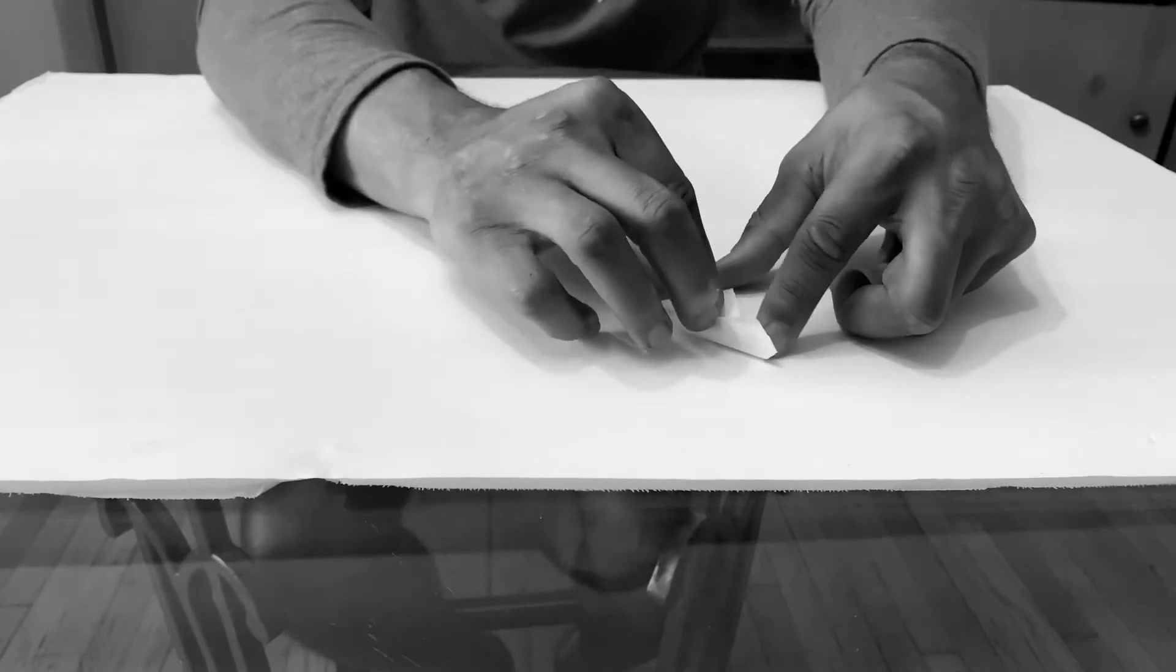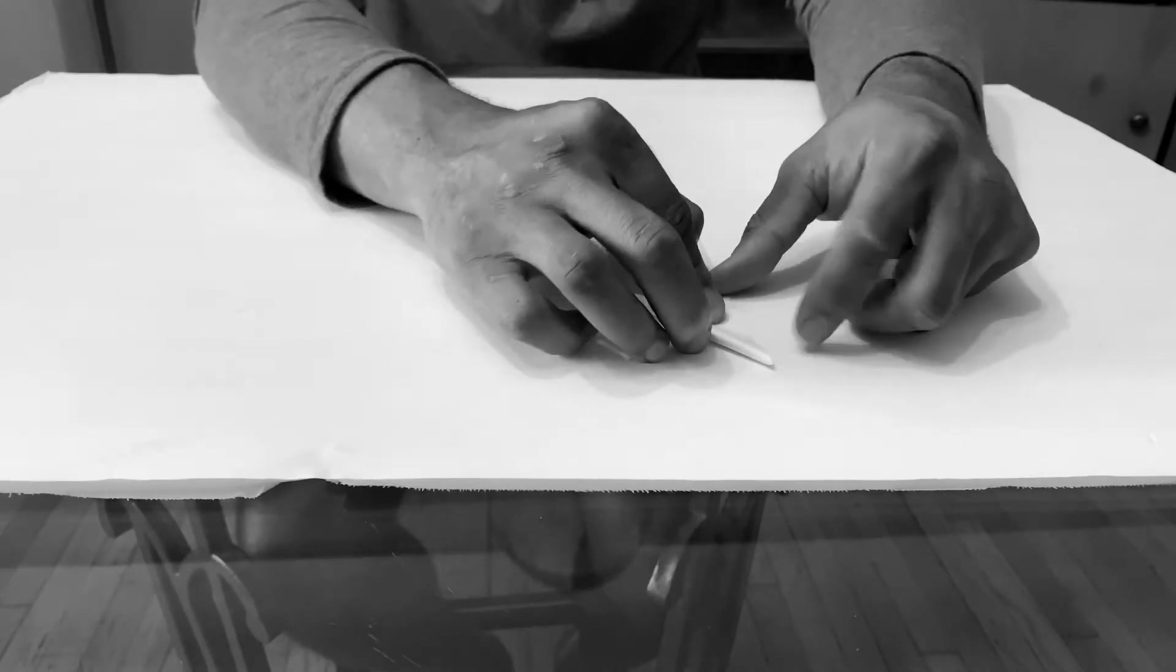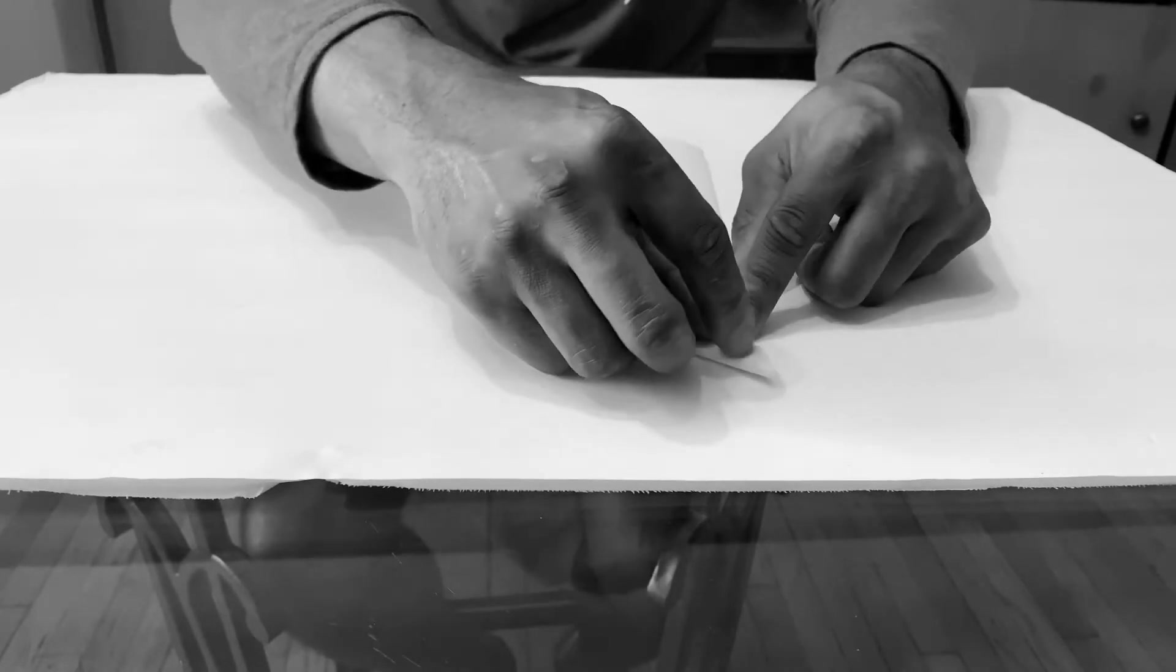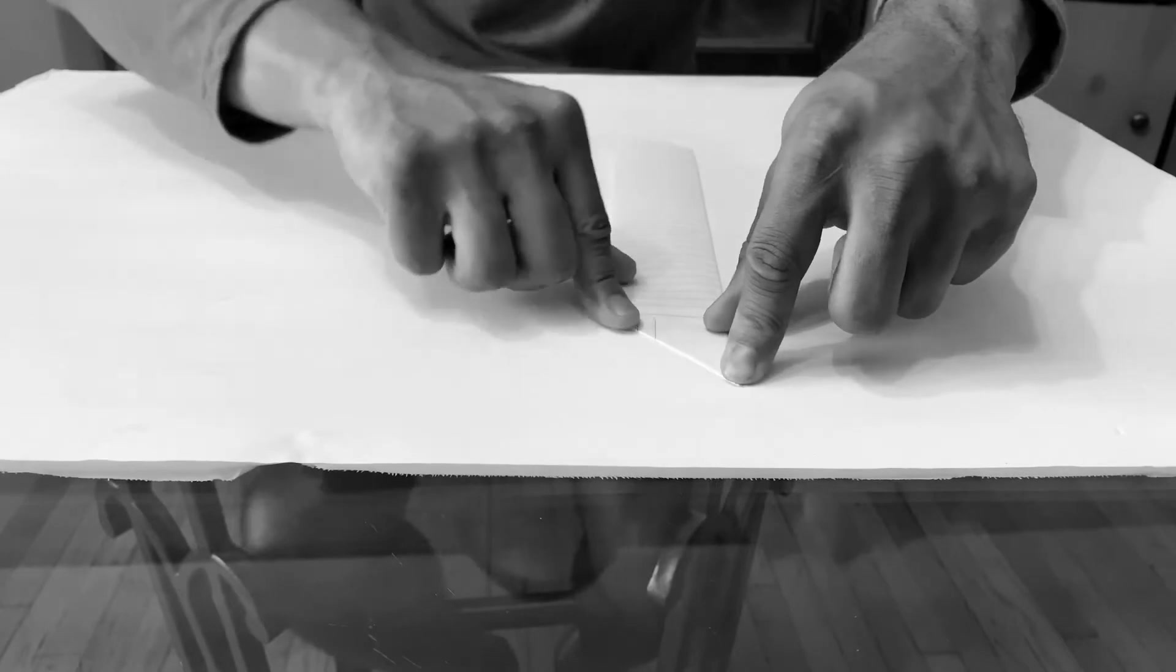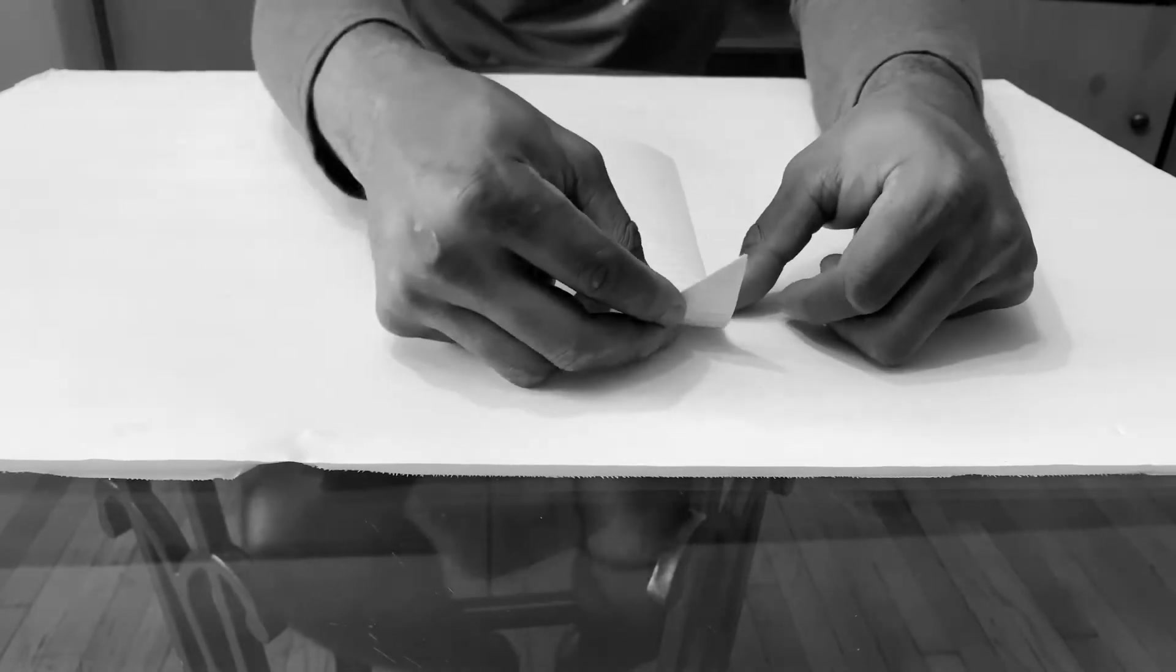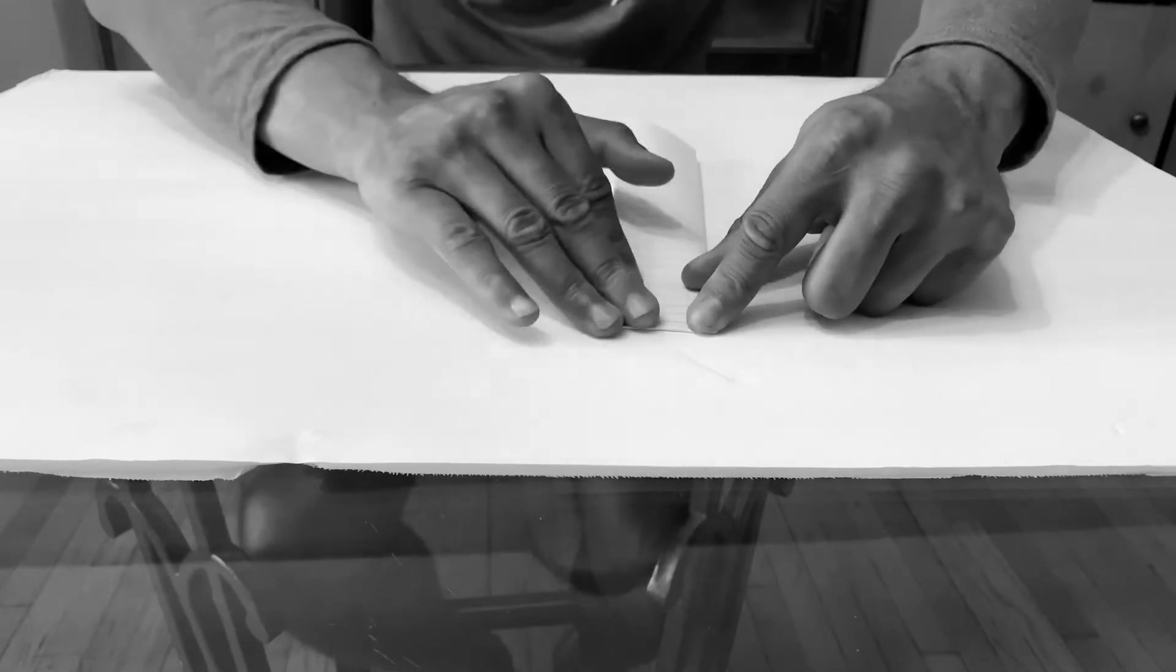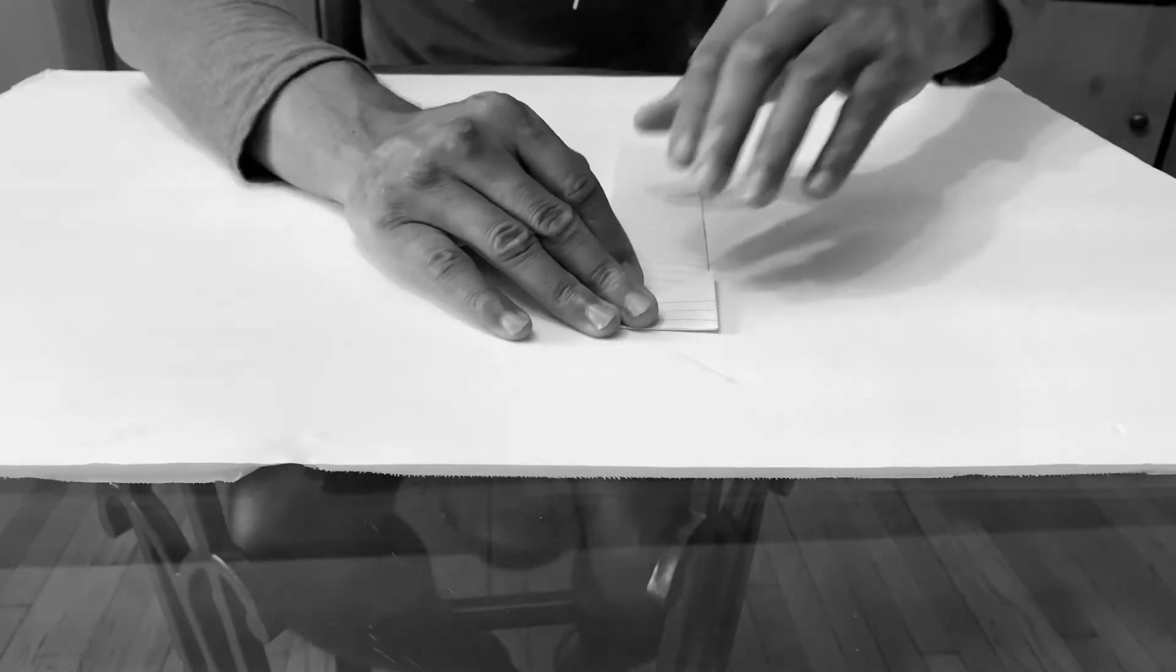take the top right corner, fold it and align it with the left side of the paper. Crease it. Now, take it and fold it over. Crease it again. And we're just going to continue this fold.